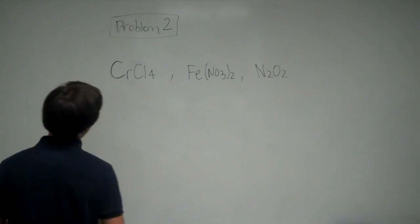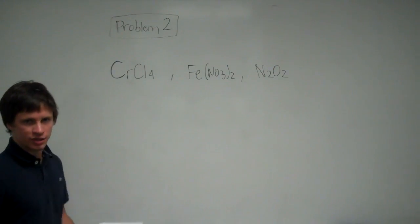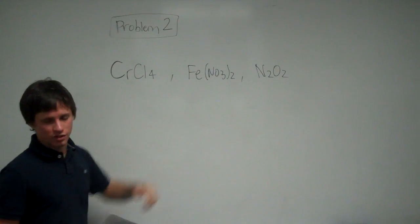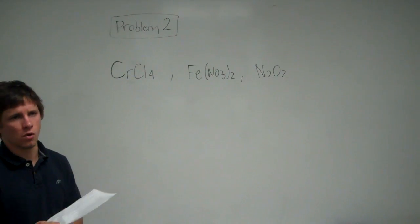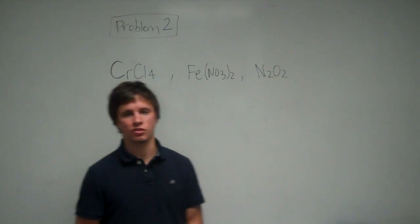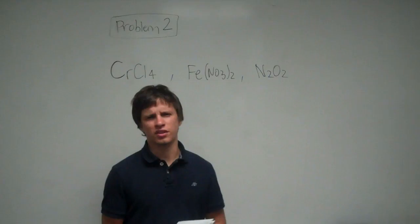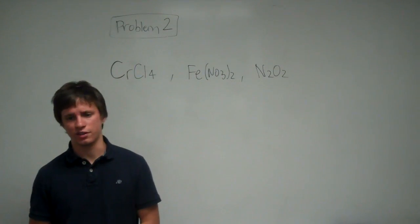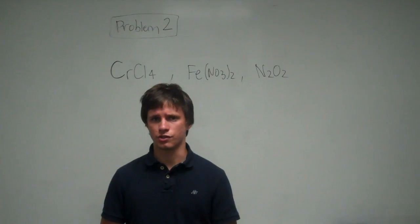So what do we know about these compounds? Chromium is a transition metal, and iron is also a transition metal. The thing about transition metals is that they have various oxidation states. For example, if you know how sodium is always plus one in its groups, transition metals in their compounds can have different numbers of positive charges.